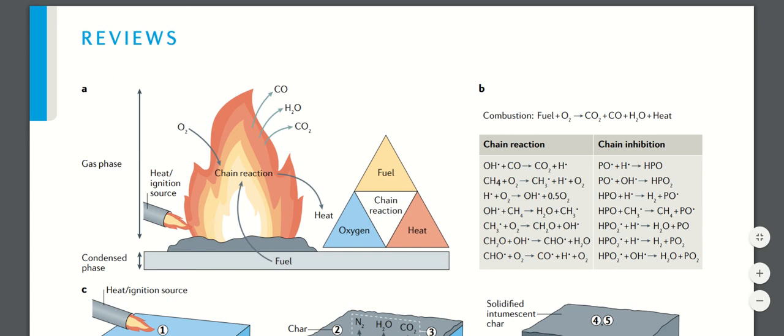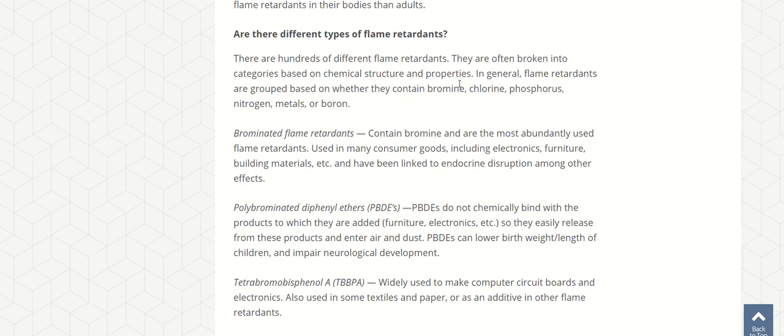There are various fire retardants that you can find in the market. They are mostly based on different materials, but they have been classified into families of bromine, chlorine, phosphorus, nitrogen, metals, and boron. While these are still being used, some are being banned.